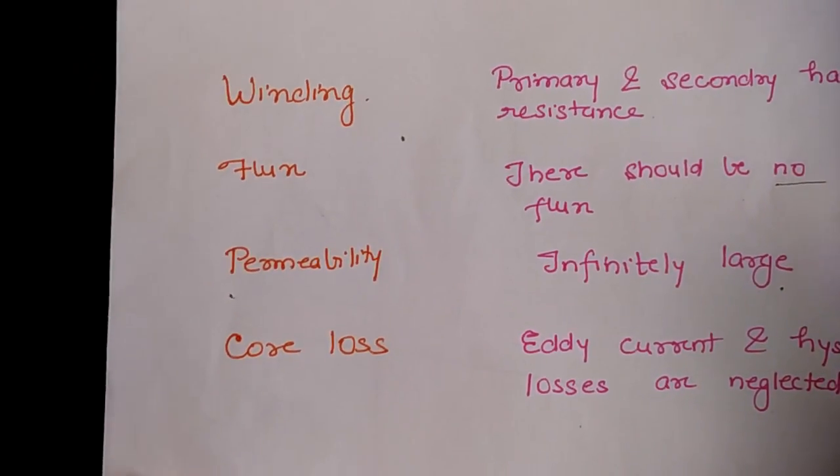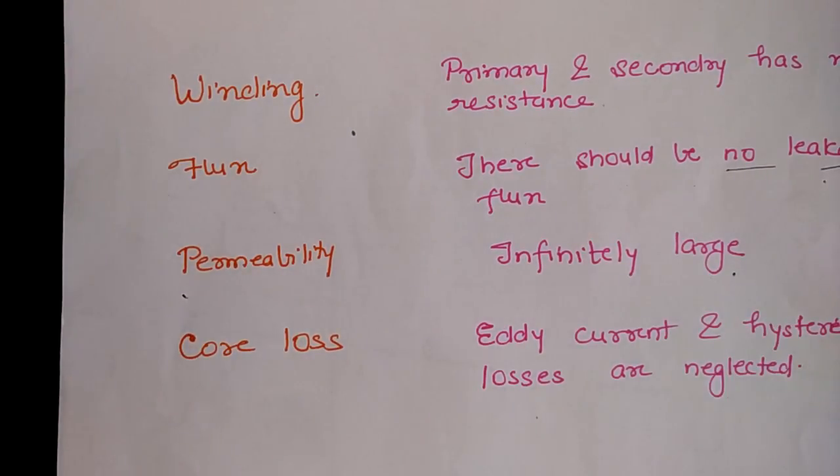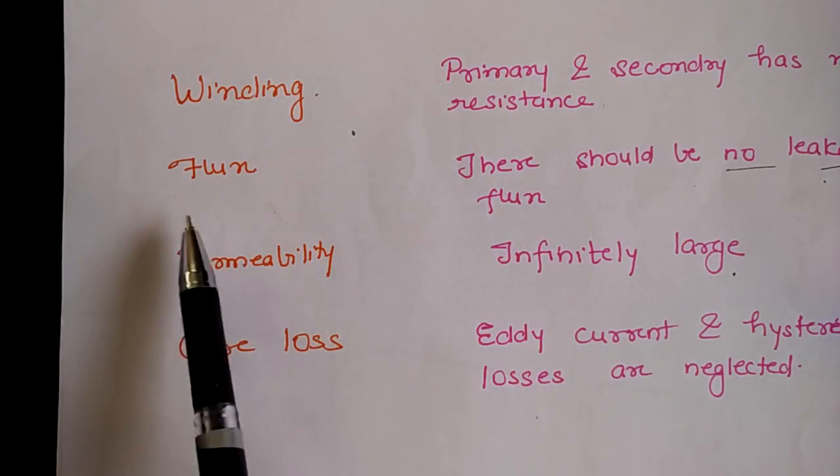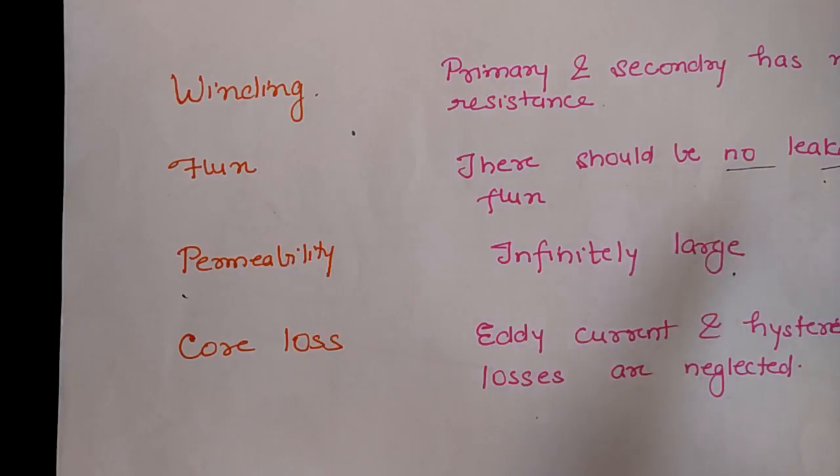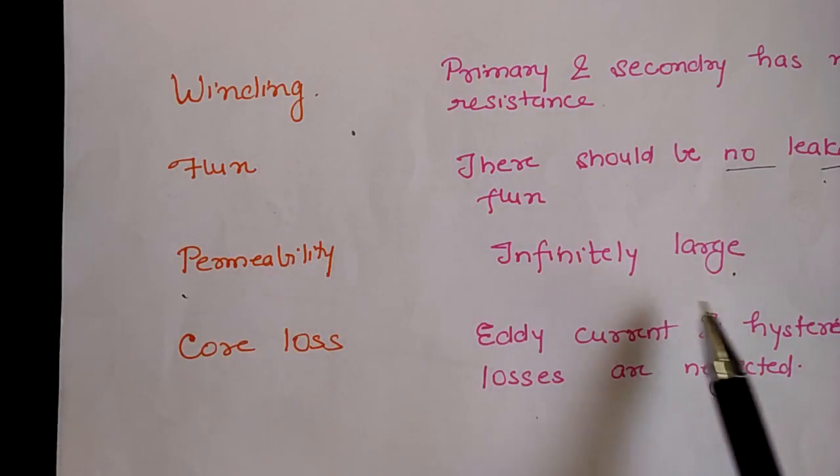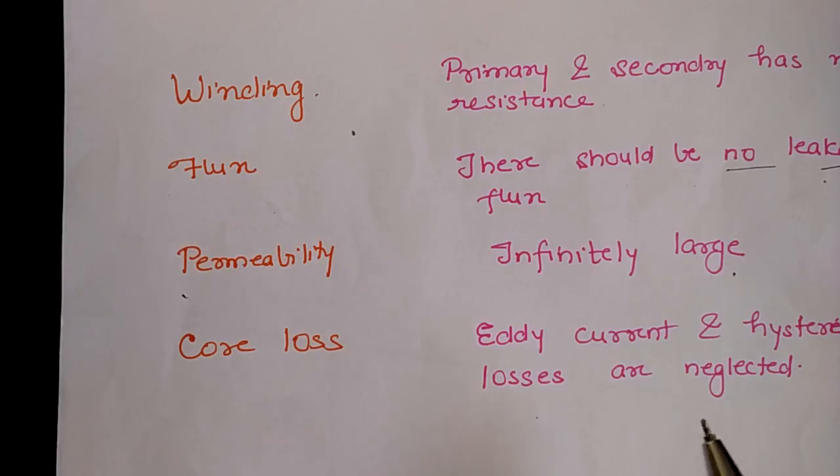If we talk about an ideal transformer and its properties, the winding - the primary and secondary has no resistance. The flux - there should be no leakage flux. If we talk about the permeability, it should be infinitely large, which means that a very small or zero quantity of current is required to establish the flux in the core.